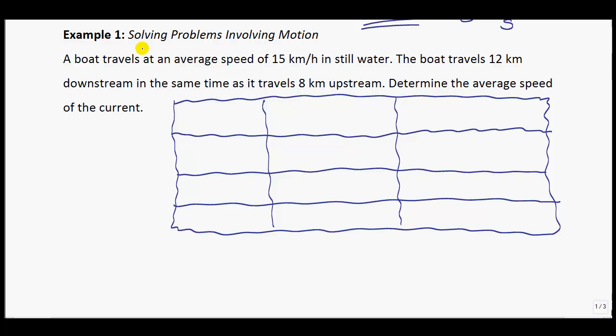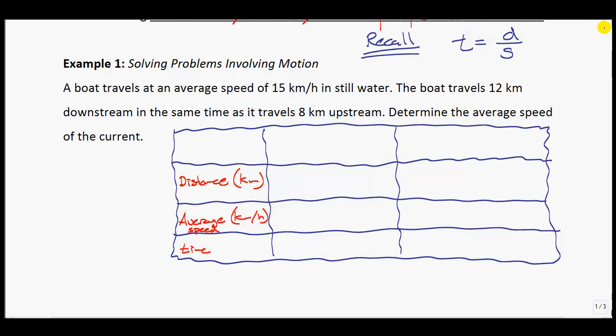On the left-hand side, I'm going to have some categories. The first category is distance, measured in kilometers. We're going to have average speed next, measured in kilometers per hour. And the last one is time, measured in hours. Across the top, I'm going to have the downstream scenario and the upstream scenario. In terms of distance, they tell us downstream is 12 kilometers, upstream is 8.